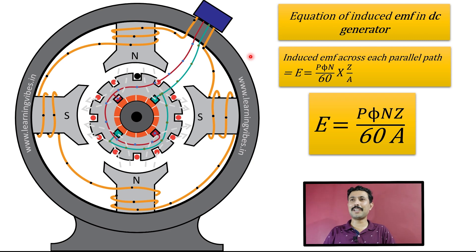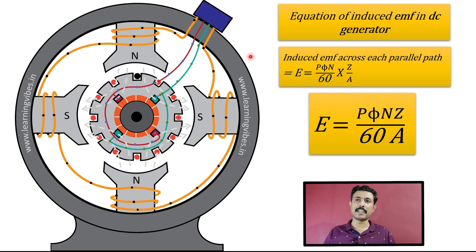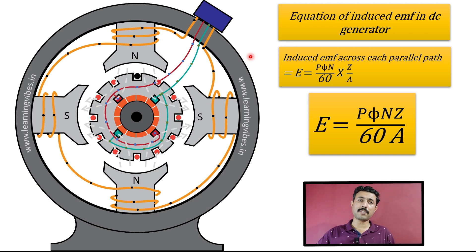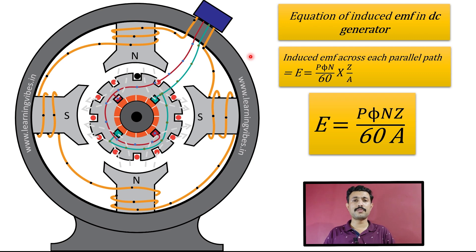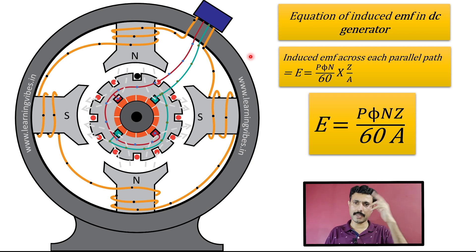The induced EMF across each parallel path is: E = (PΦN / 60) × (Z / A). Here is our equation for induced EMF. If you like and enjoyed this video, do not forget to like it. If you have any queries regarding any electrical topic, write them in the comment section below. You can also join our Telegram group where I actively solve student queries. So that's all from my side — until we meet again in our next video. Bye!